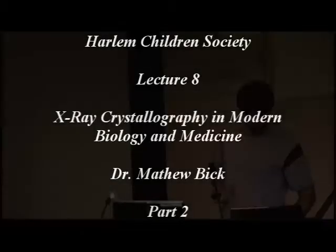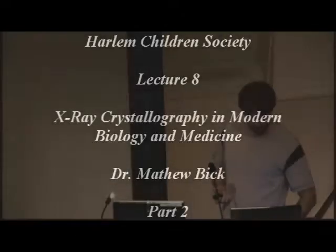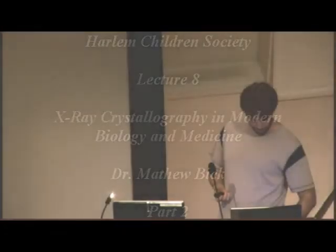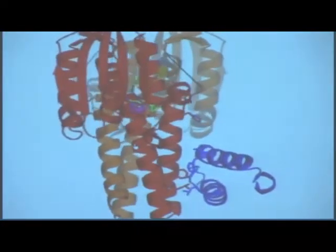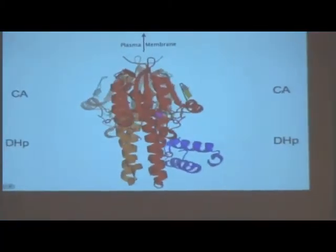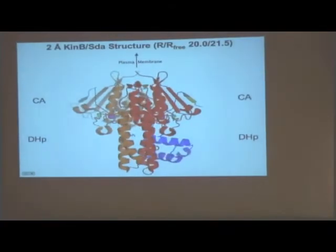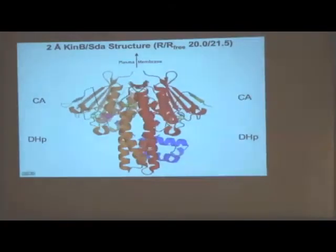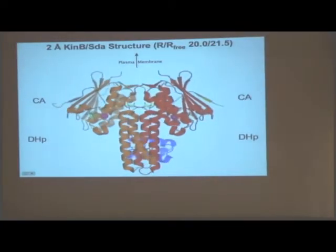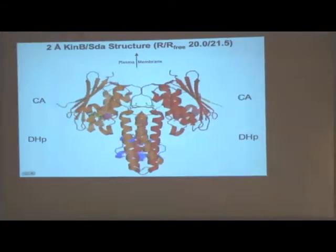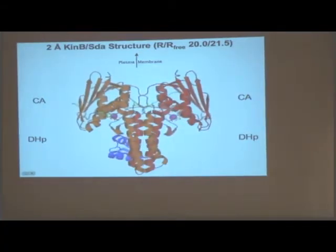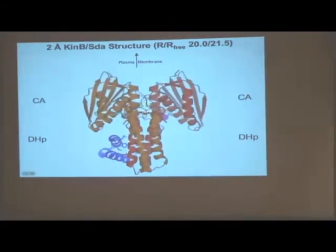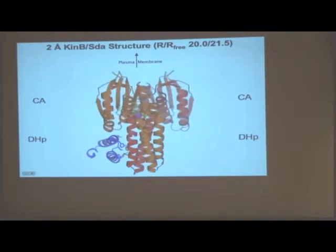From that, we can actually reconstitute what our molecule looks like. This is one of those gatekeepers — the protein that senses the environment and tells the bacteria what to form a spore. And this blue molecule down here is the inhibitor. So when this protein is expressed in the cell, it will not allow the cell to sporulate.